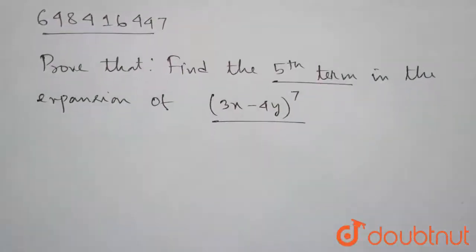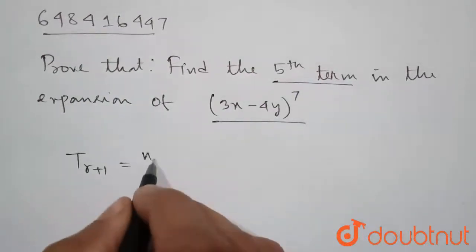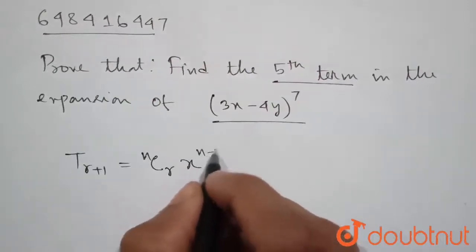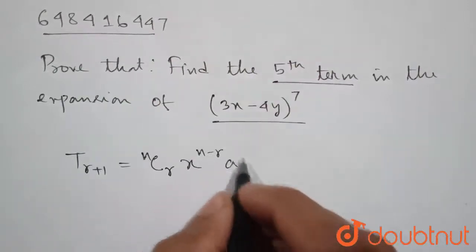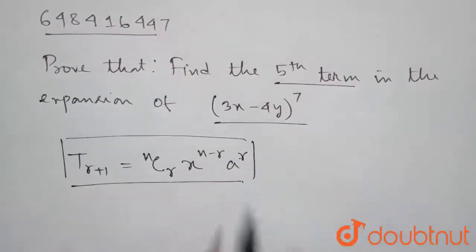So we know that in binomial expansion the r+1th term is equal to nCr times x to the power (n-r) times a to the power r. So this is our r+1th term.